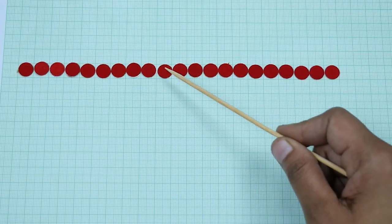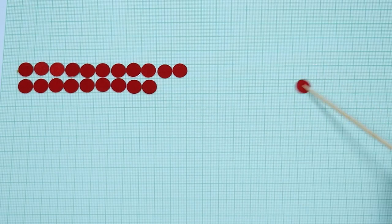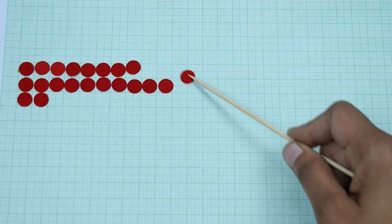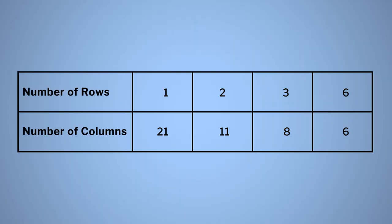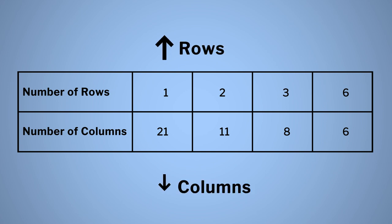Next, we moved on to inverse variation using an activity. Even a simple object like bindi can be used to teach indirect variation in the class. It was a really fun activity for my students. After observing the table, my students came up with the answer that here the two quantities are going in opposite directions — one is increasing and the other is decreasing. That means this is a case of inverse variation.